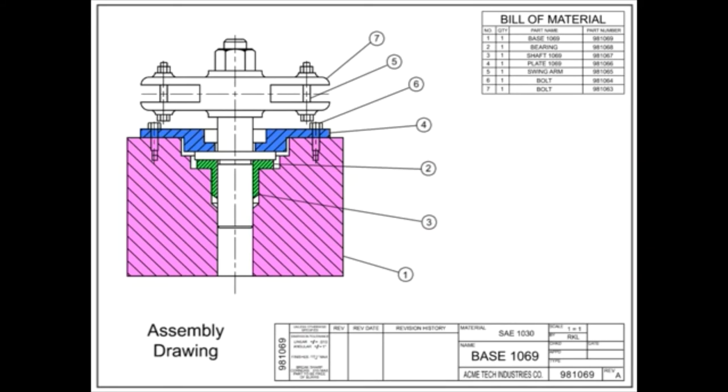There are few, if any, hidden lines in an assembly drawing. Only the dimensions required to fully assemble the part or to be used as references are shown. In many cases, the order of assembly may be given in the notes.